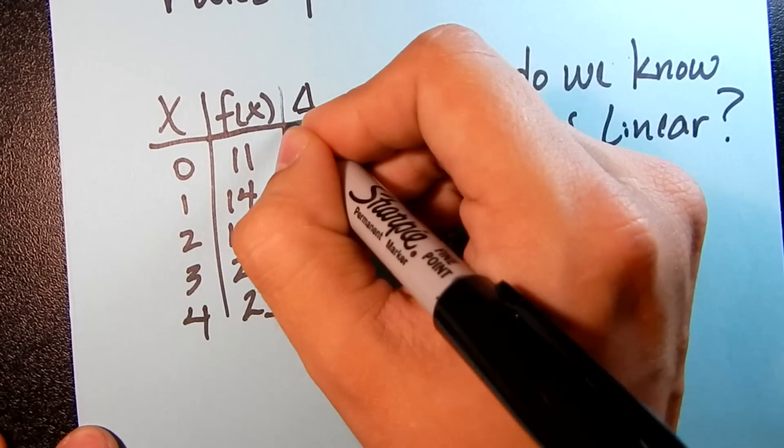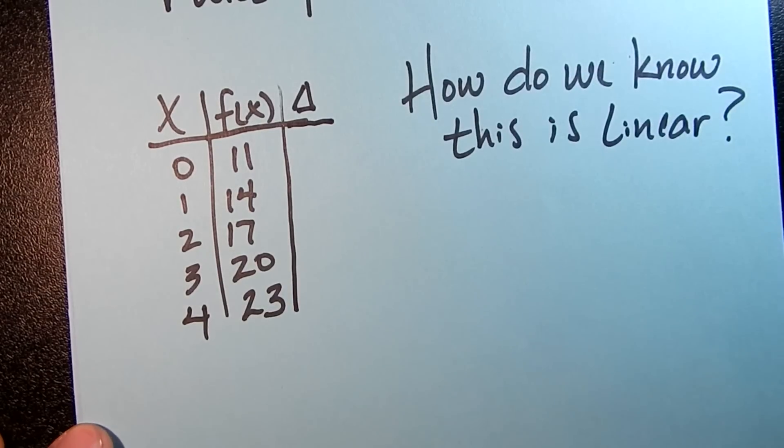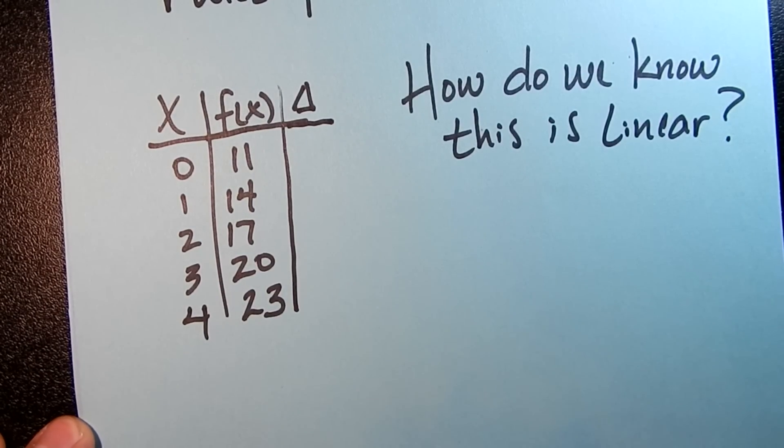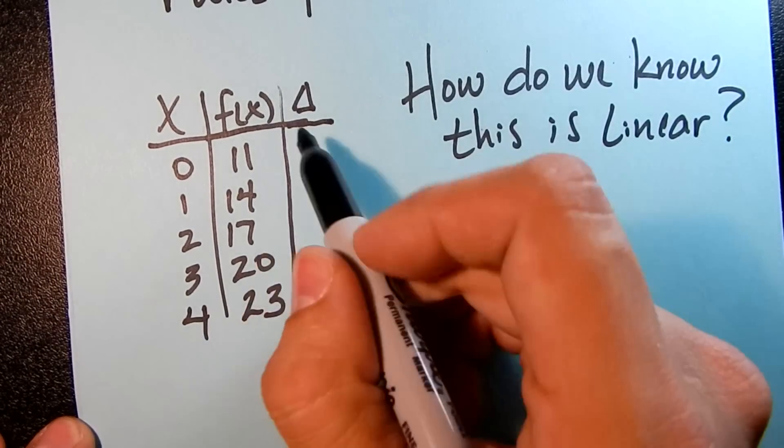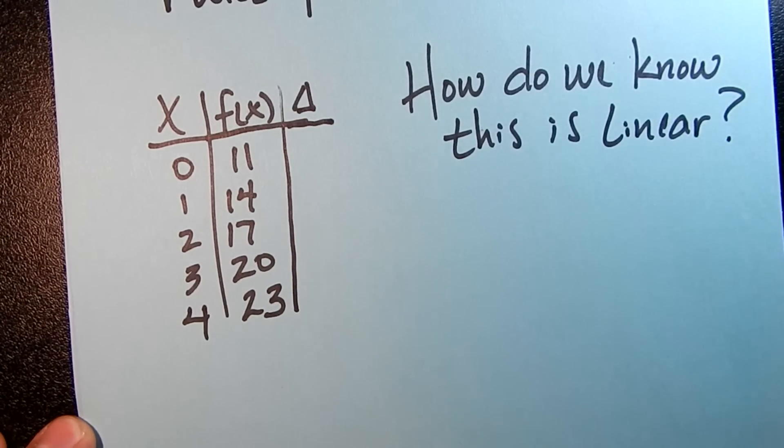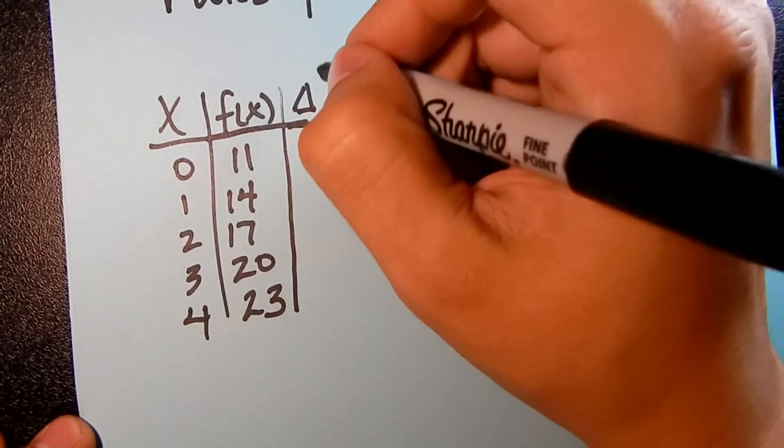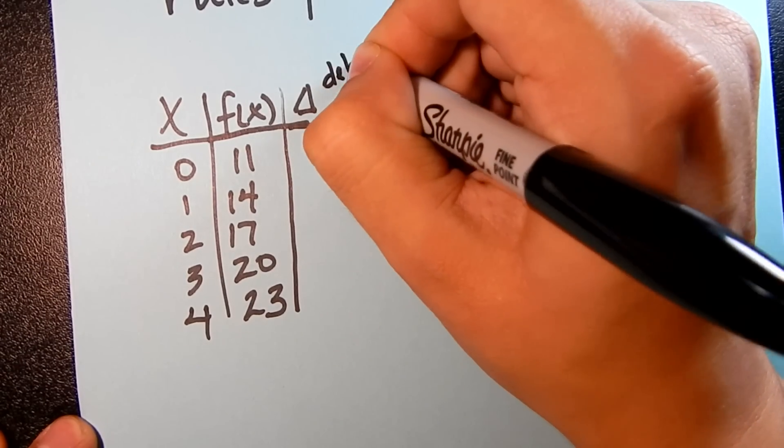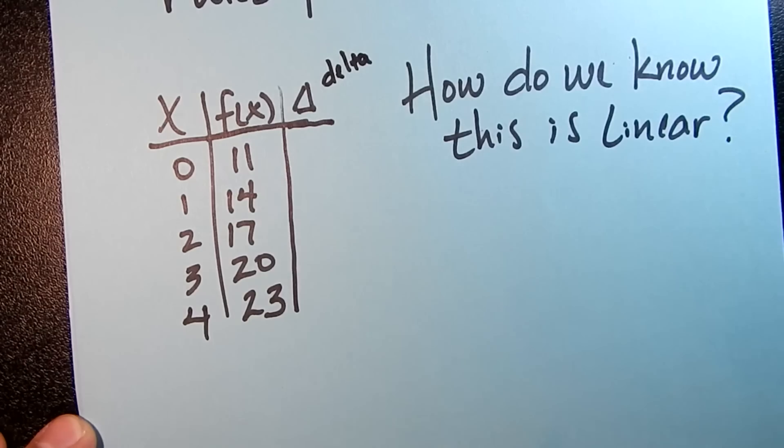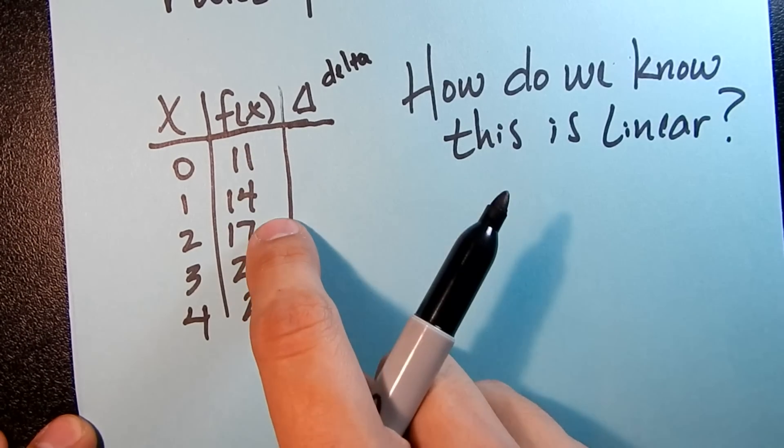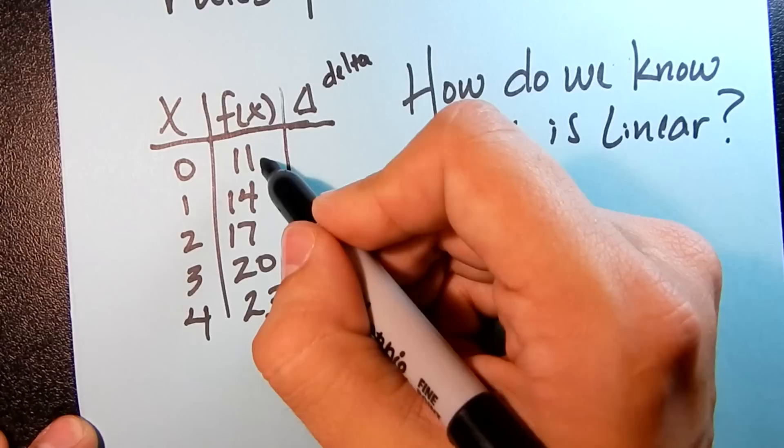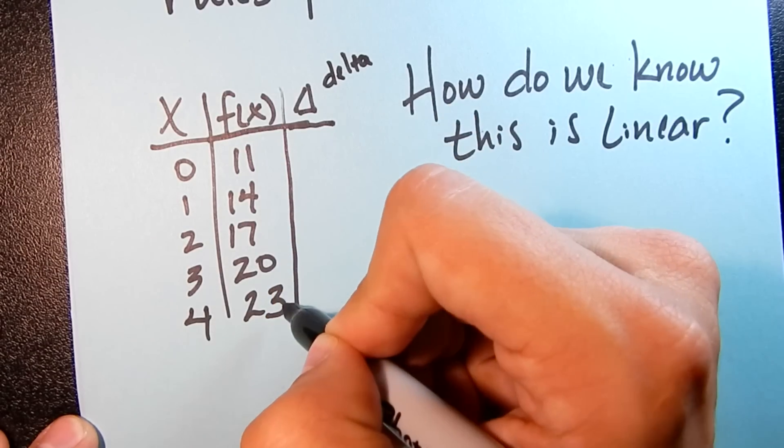And you will typically see this column called delta. So the delta column, basically what it is describing is change. Now delta is a Greek letter, and that's how we read it. And delta just describes change. So in the case of this table, we're looking at how do each of these outputs change.